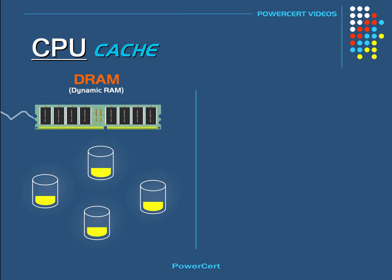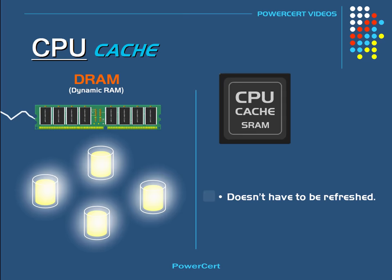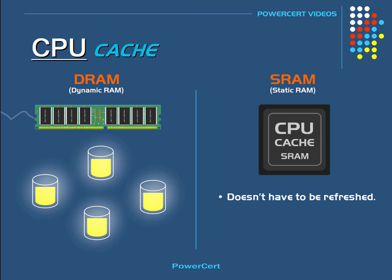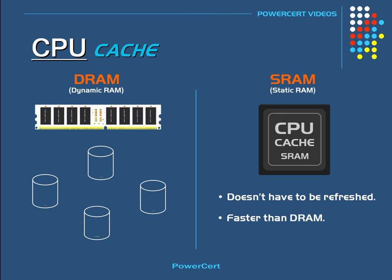There is another type of memory that a computer uses that doesn't have to be constantly refreshed, and this memory is called SRAM or static RAM. SRAM is what is used in the CPU cache. Because SRAM doesn't have to be constantly refreshed, it is a lot faster than DRAM — and it's also very expensive.